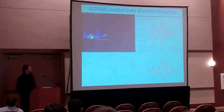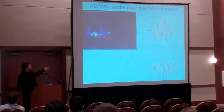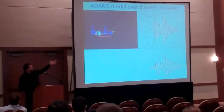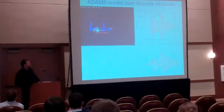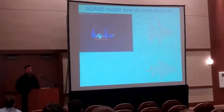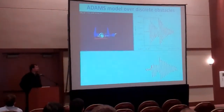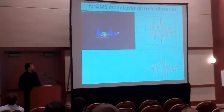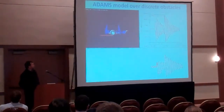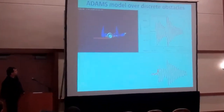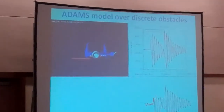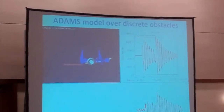You can see here the tire tester model driving over a discrete optical. The graph on the right-hand side shows the respective forces measured in the Evans model. You can see the very low damping as the tire moves onto the obstacle and away from the obstacle at the end.